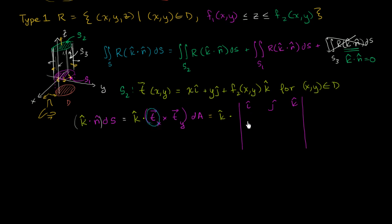So this is equal to k times a matrix ijk of the partial of t with respect to x. Well, the partial of t with respect to x. I'll do this in blue. It's going to be 1, 0, 1, 0. And the partial of f2. Partial of f2 with respect to x.